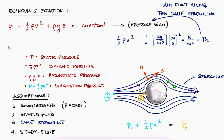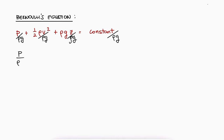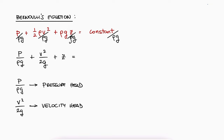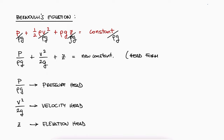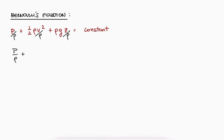Notice that this equation is very similar to what you learned in physics when studying energy — in that case we had work, one half of mv squared, and mgh. If we divide the entire Bernoulli equation by rho and g, we get the pressure head for the first term, velocity head for the second term, and elevation head for the third term. We call this the head form of the Bernoulli equation. The head has units of length — most commonly meters for metric and feet for English units. The third form of Bernoulli is obtained by dividing by rho only, but this form is not used very often.